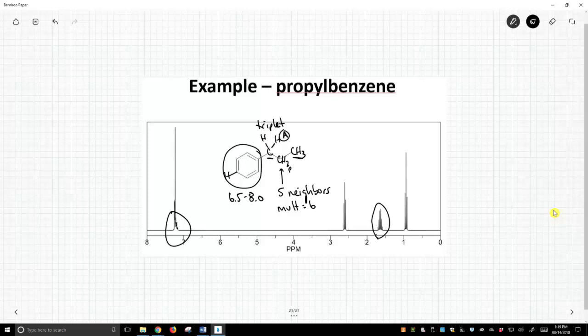Let's label these A, B, and C. That's going to be A. There's our triplet. This is our sextet. And then this methyl group on the end, this CH3, has two neighbors. This is also going to be a triplet. And that's C right there.